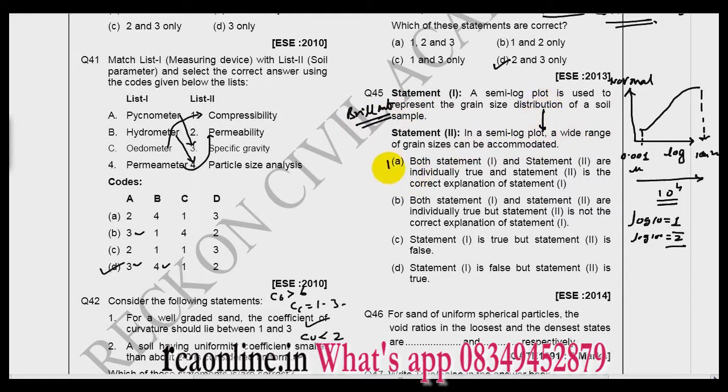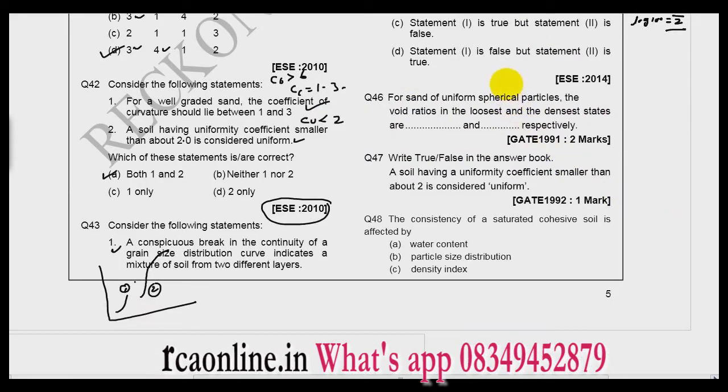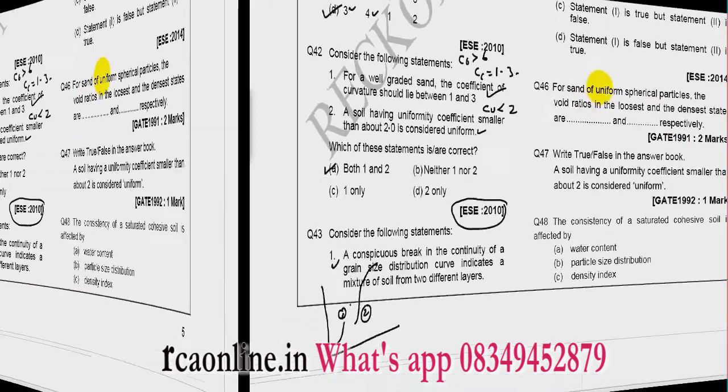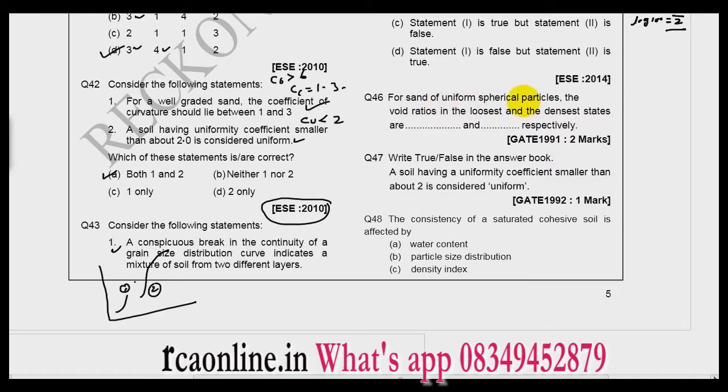Now let us move to the GATE questions. For a sand of uniform spherical particles, the void ratio in the loosest and the densest state are, so please remember, it is 0.91 and 0.35. This is the repetition in engineering services and GATE both, so you have to remember this. It has a very long derivation.